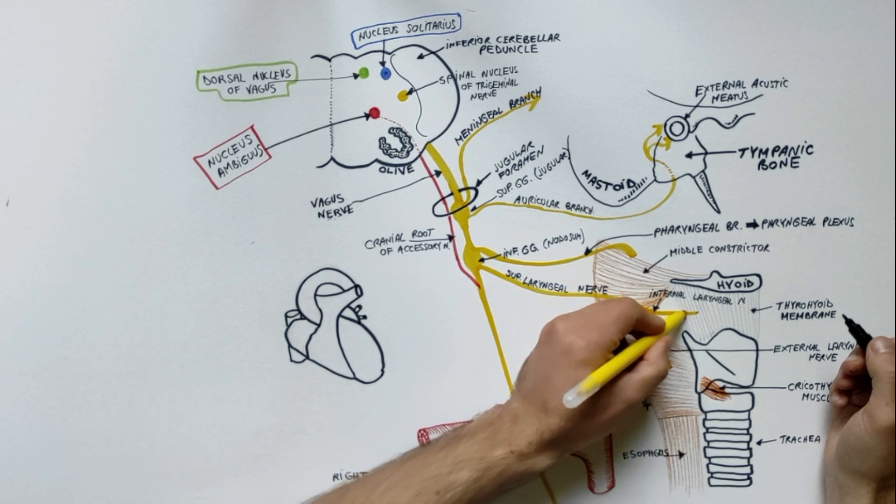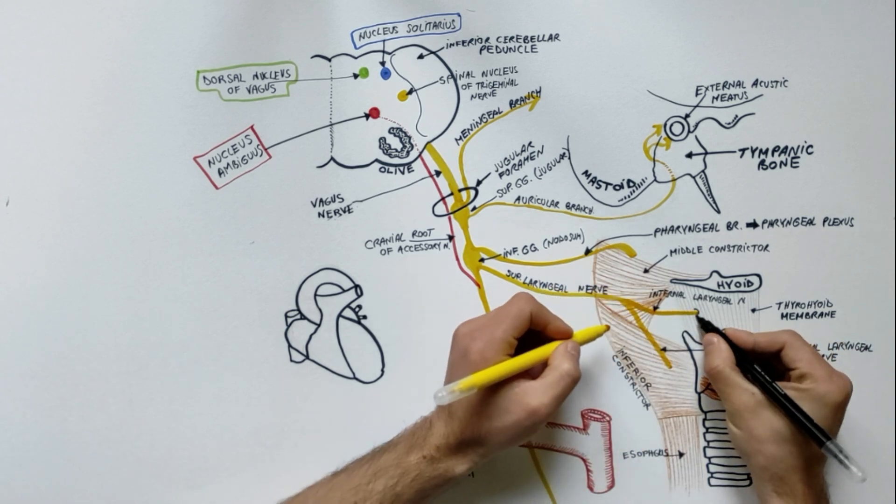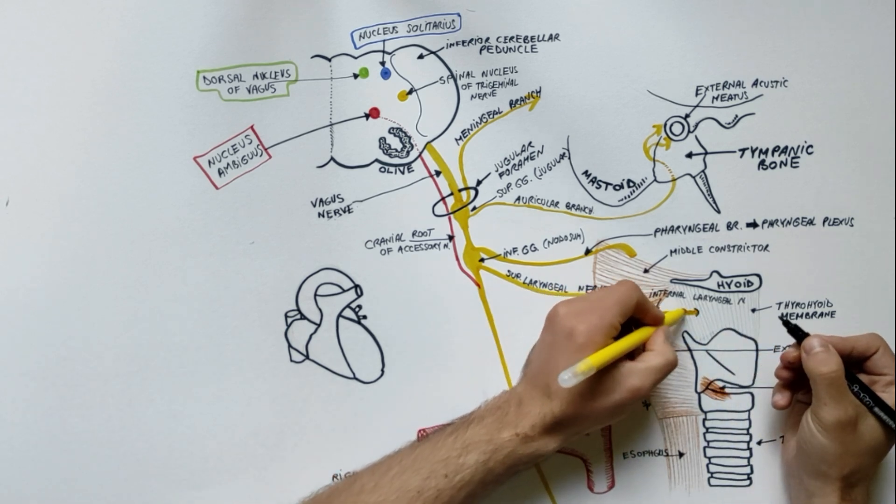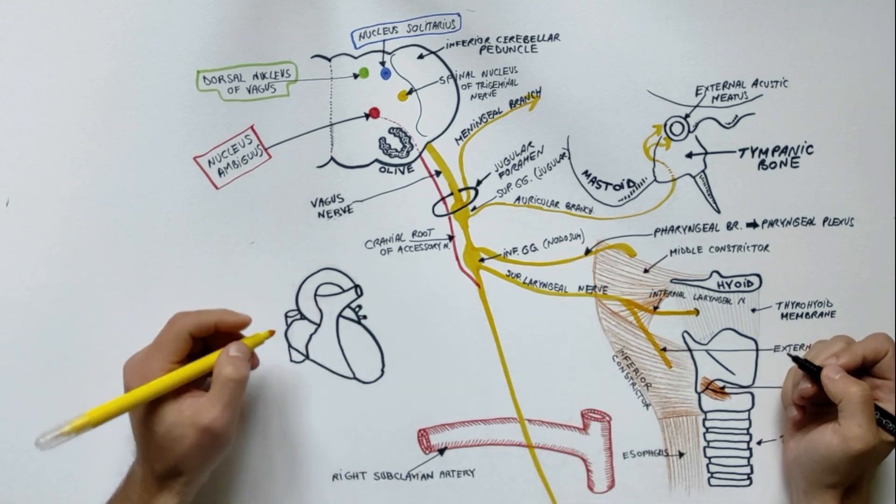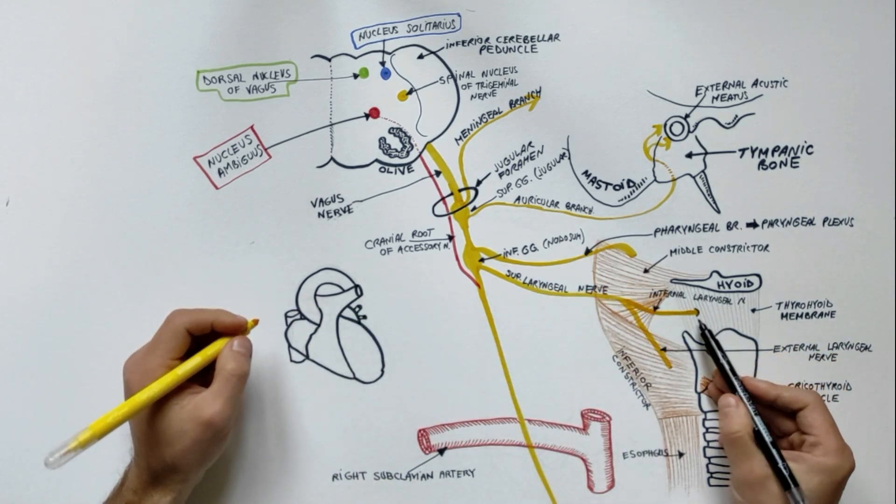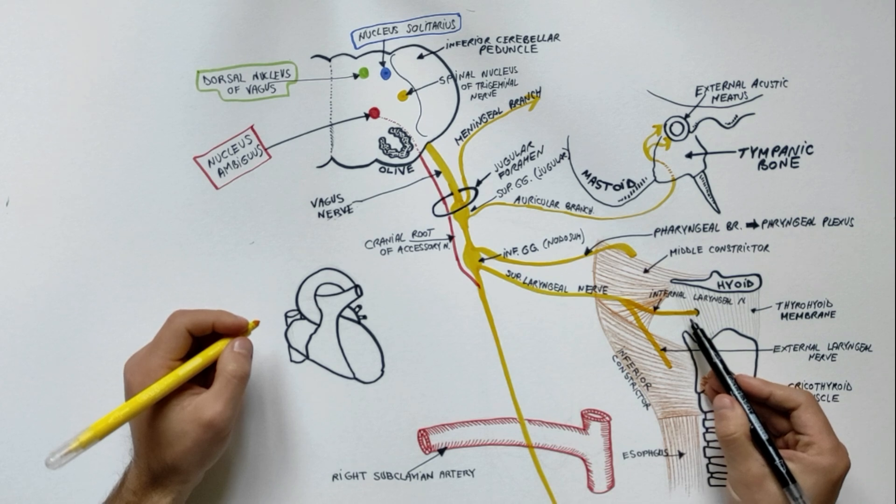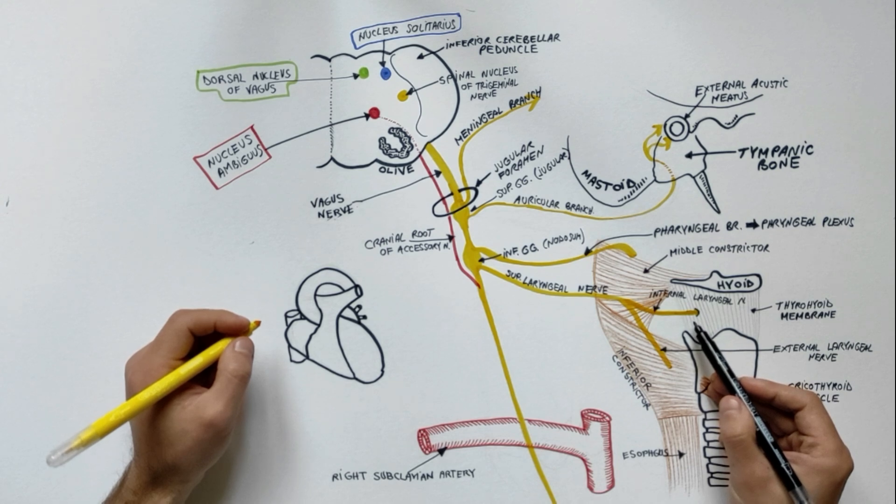The internal laryngeal nerve is a sensory nerve and pierces the thyrohyoid membrane to supply the mucous membrane of the pharynx, epiglottis, vallecula and the posteriormost part of the tongue, and also the mucous membrane of the larynx above the vocal cords.